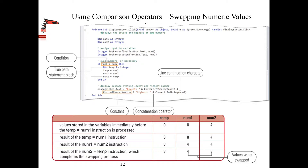This is the block of code to write such a program. We start with defining two integer values - the numbers should be integer values. We define them in the event procedure section, which is anything after Private Sub: Dim num1 As Integer and Dim num2 As Integer.